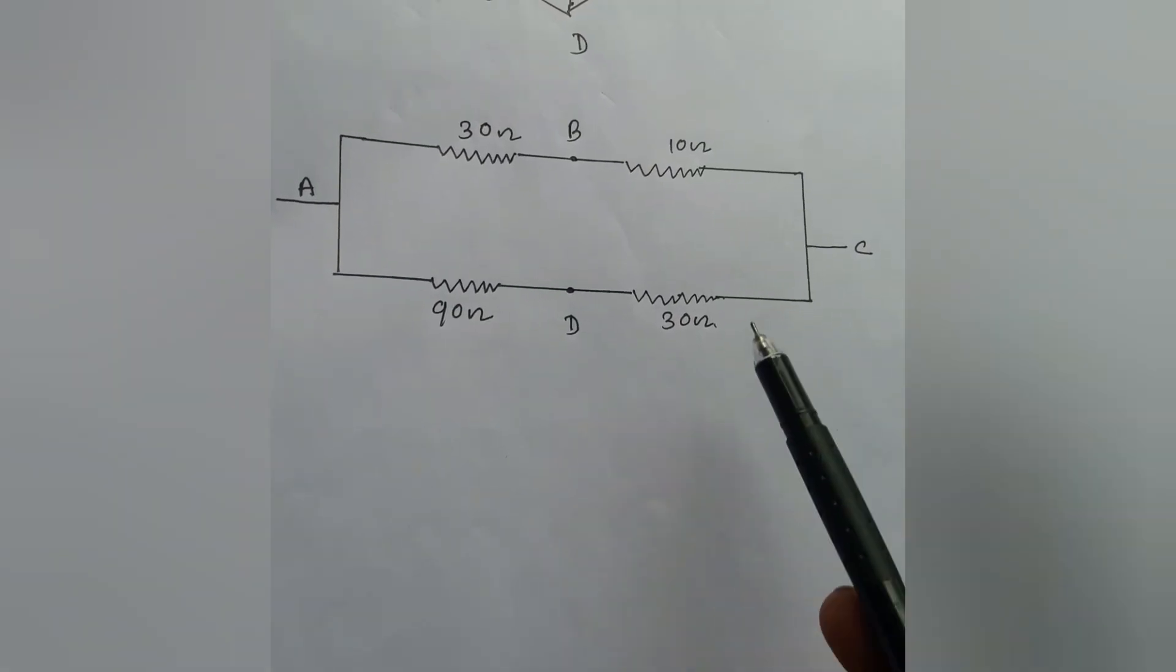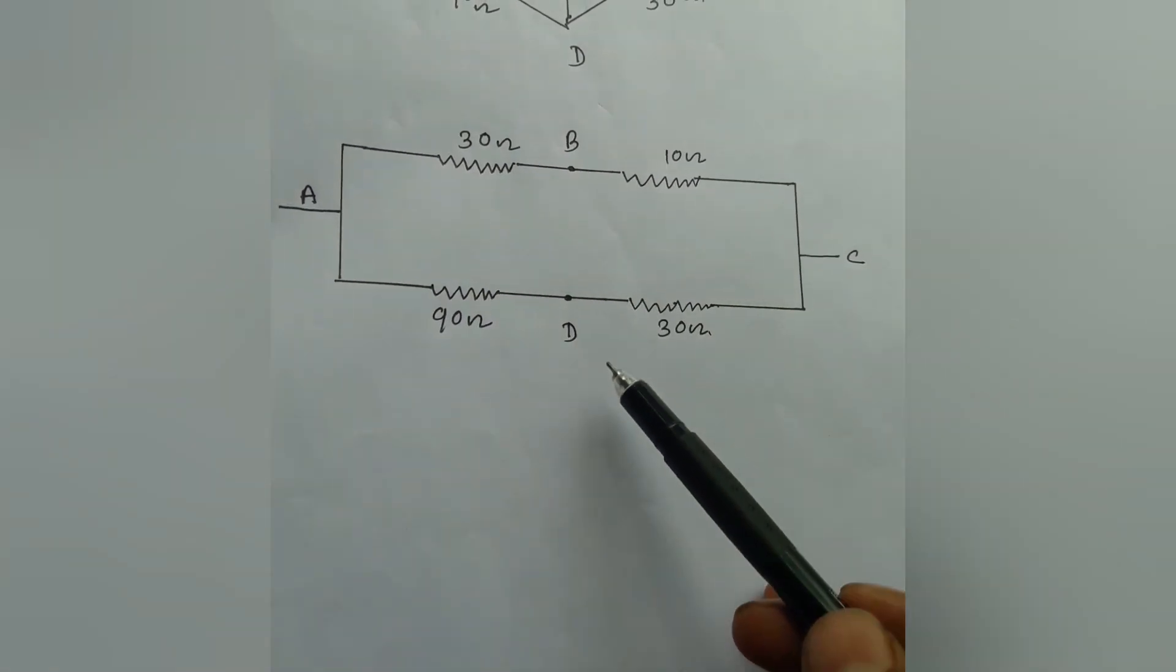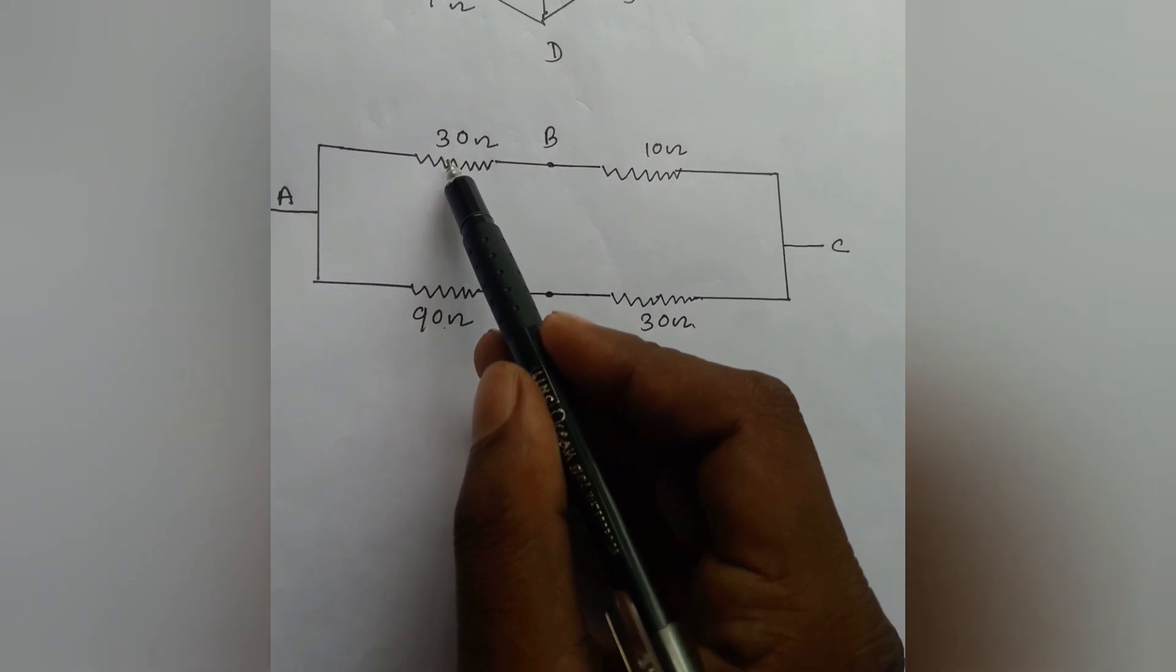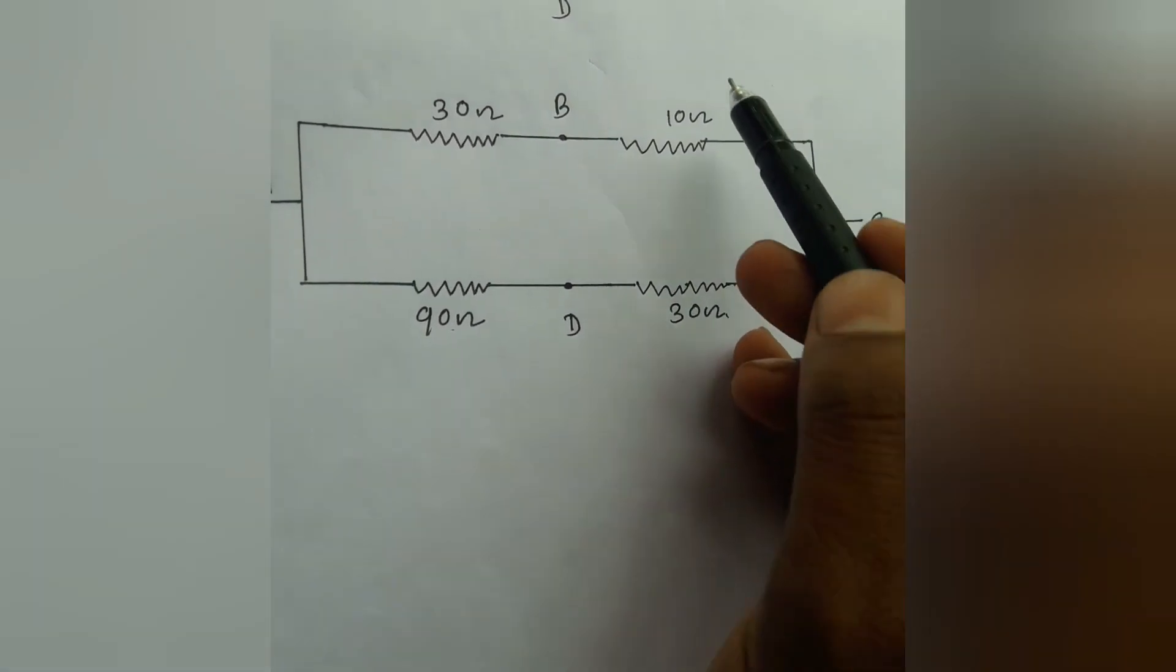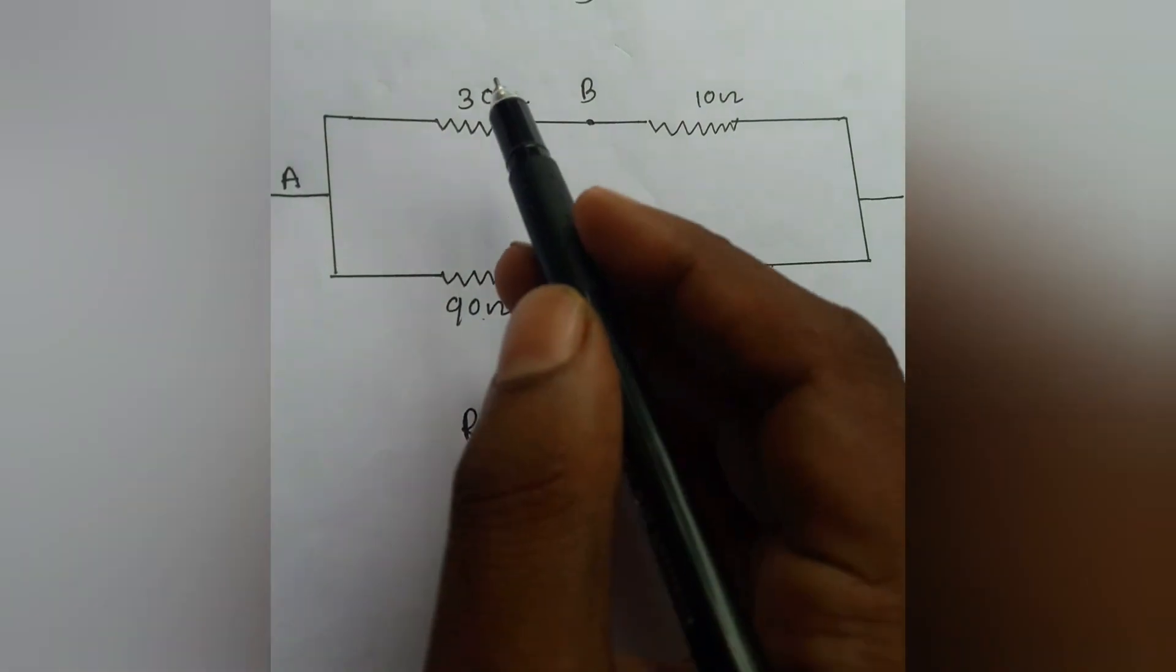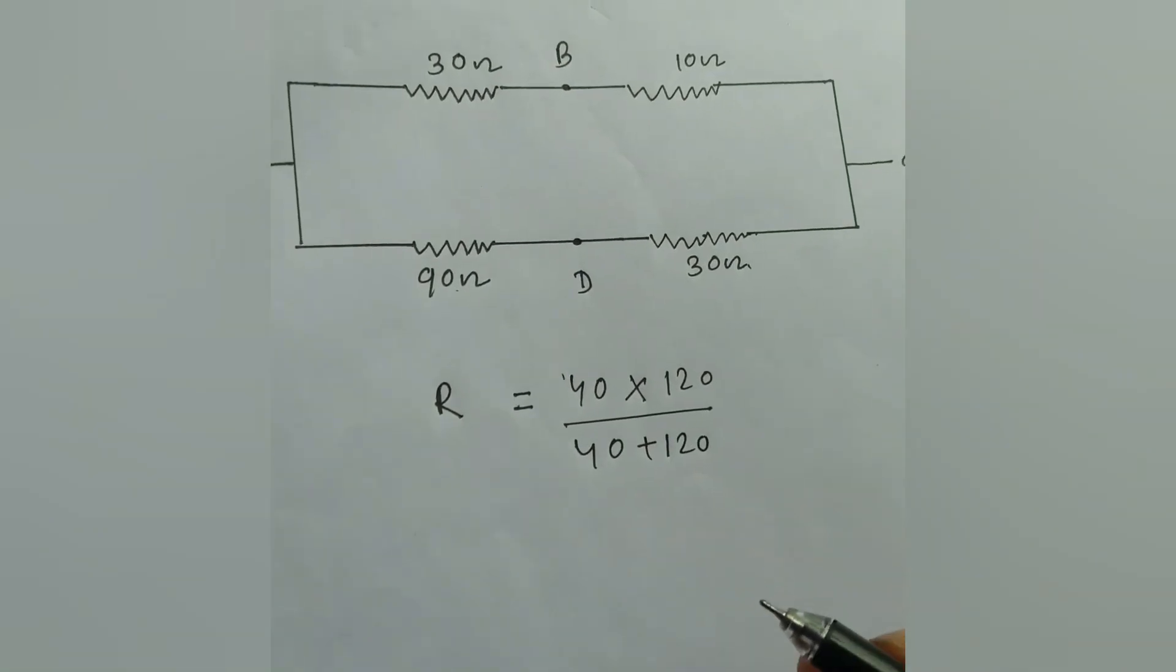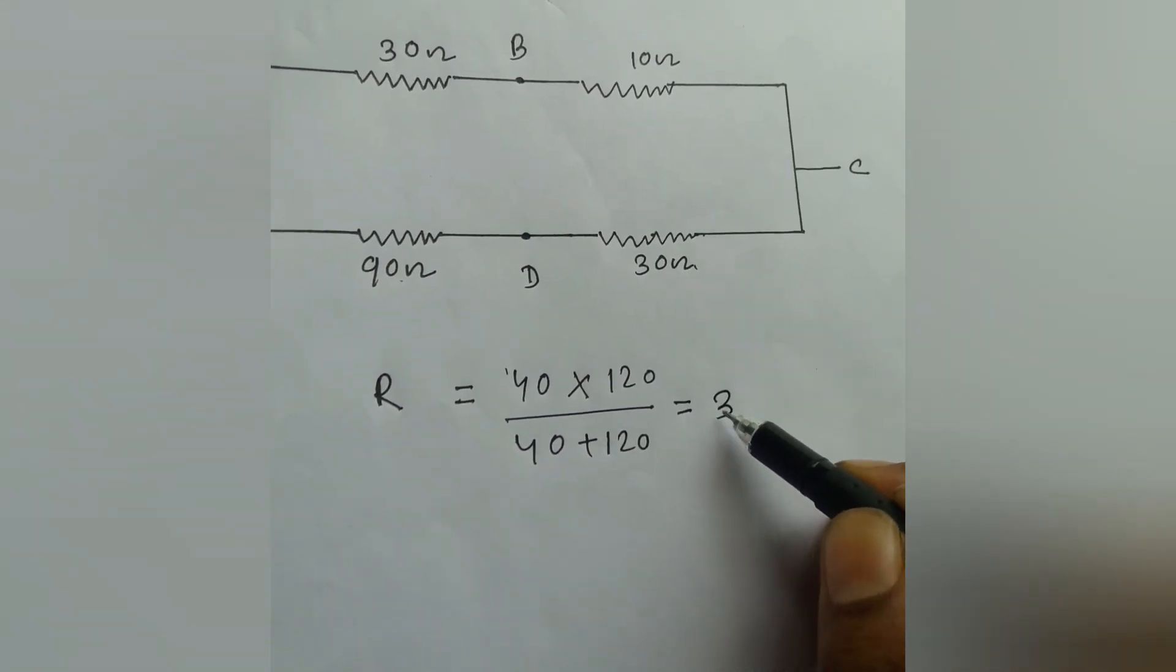Now the equivalent circuit is like that where we have omitted the 10 ohm resistance from B and D, and this is a very simple circuit. 30 ohm and 10 ohm are in series, also 90 ohm and 30 ohm are in series. We see that 30 + 10 is 40 and 90 + 30 is 120. Therefore these two resistances are in parallel and the resultant resistance R = (40 × 120) / (40 + 120), and we can simplify it very easily and we get the result 30 ohm.